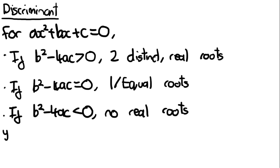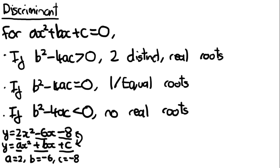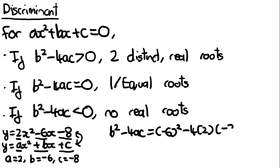To put this into number form, using the example y equals 2x squared minus 6x minus 8: comparing this to ax squared plus bx plus c, we can identify that a equals 2, b equals minus 6, and c equals minus 8.